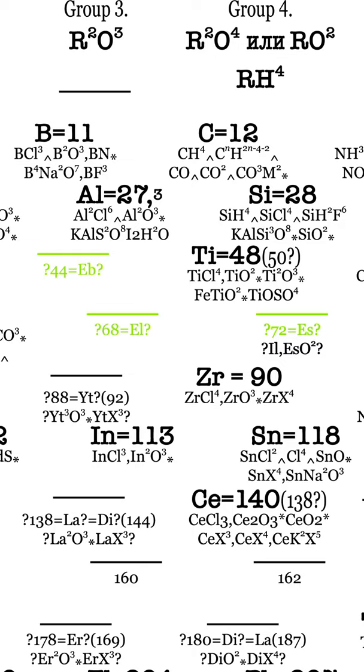The amazing thing is that around five years later, one of these elements was discovered. It became known as gallium and matched Mendeleev's prediction very closely.